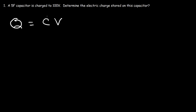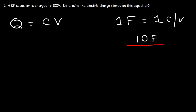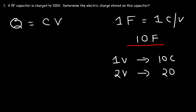The unit for capacitance is the farad. You need to know that 1 farad is equal to 1 coulomb per volt. Imagine if we have a 10-farad capacitor. If we connect it across a 1-volt battery, it's going to store 10 coulombs of charge. If we connect it across a 2-volt battery, the quantity of charge it will store will be twice as great — 20 coulombs.